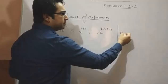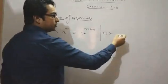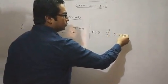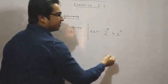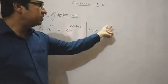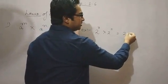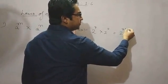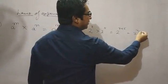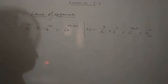Let us see an example. If 2 raised to the power 7 multiplied by 2 raised to the power 5 — here both the bases are same, that is 2, but the powers are different. Then we will add the powers, that is 7 plus 5, so 2 raised to the power 12 is the required answer.